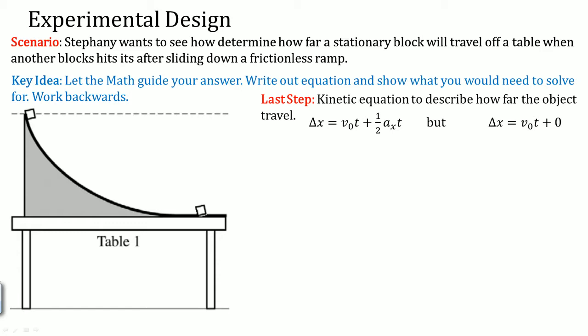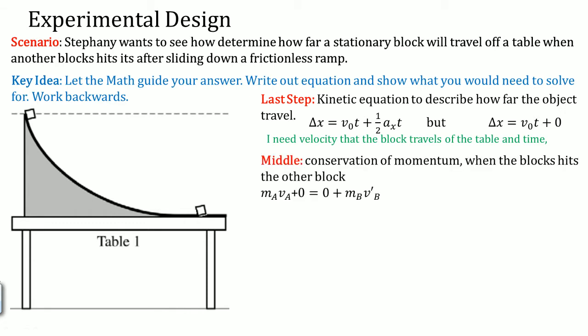In the end, we want to see how far the object traveled, so we're going to use our kinematics equation. Notice that you're going to need the velocity of the block that travels off the table and time. You're going to need V naught and T. Remember, there is no acceleration in the X, that's why it's plus zero here. This is during the collision.